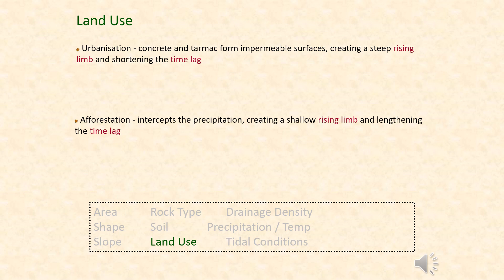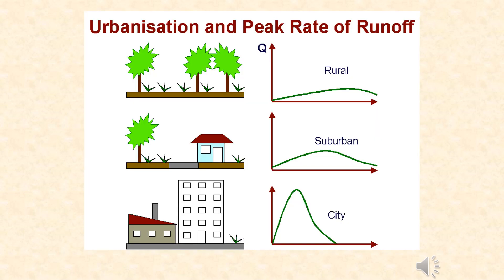If the land is forested or used for agricultural purposes, this can also have an impact. A rural area with a lot of vegetation and trees will have a very low storm hydrograph because the trees intercept precipitation, absorb some moisture, and prevent a lot of overland flow, making the river less likely to flood.